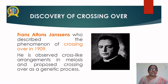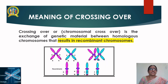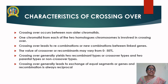Franz Alphonse Janssen described the phenomenon of crossing over in the year 1909. He could observe cross-like arrangements in meiosis and proposed crossing over as a genetic process. So, crossing over or chromosomal crossing over is the exchange of genetic material between homologous chromosomes that results in recombinant chromosomes.